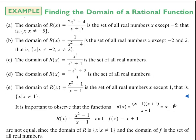If I graph this rational equation, it's going to look just like that line. However, even though I can simplify it, the rational function as given does not have x = 1 in the domain. We always want to be careful when asked about domain — it's important to simplify expressions, but the function is what it is, and we're always going to exclude 1 from the domain of this function.